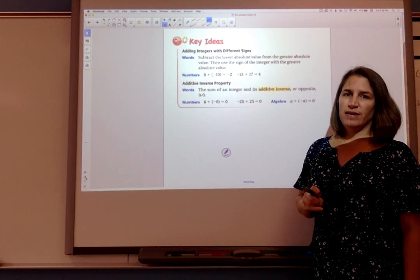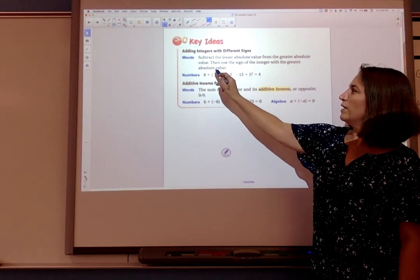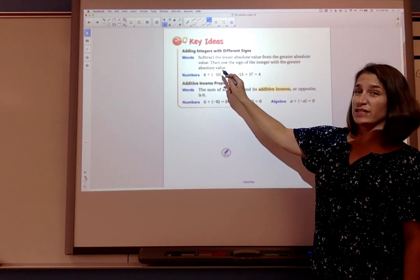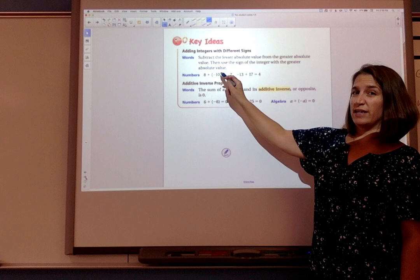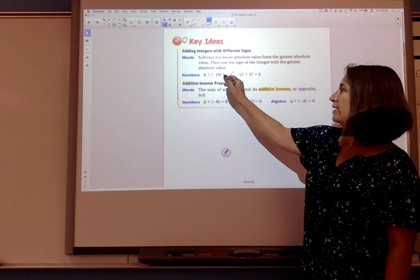So that means my larger absolute value is 10 but the integer is -10 which means my sum is -2.